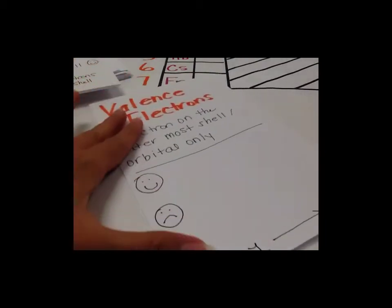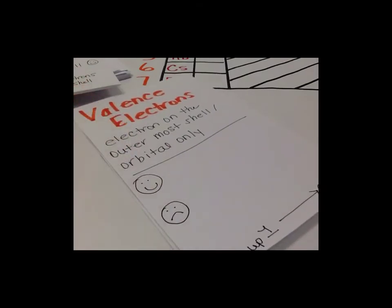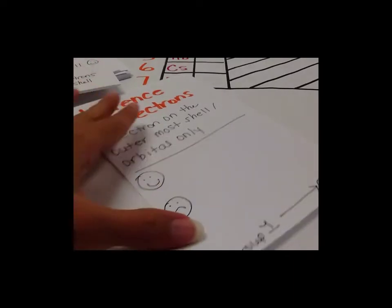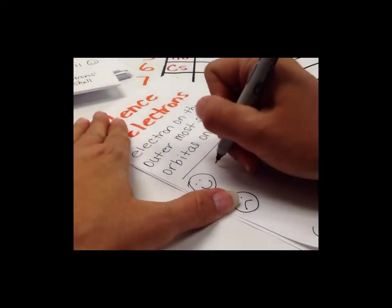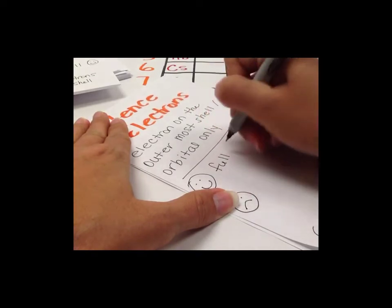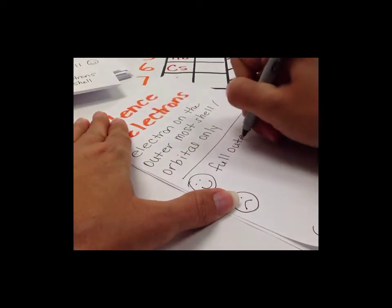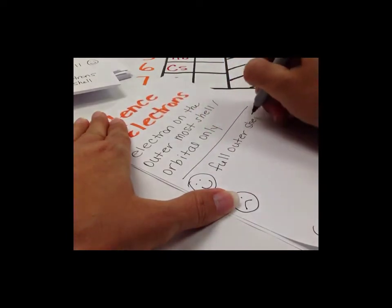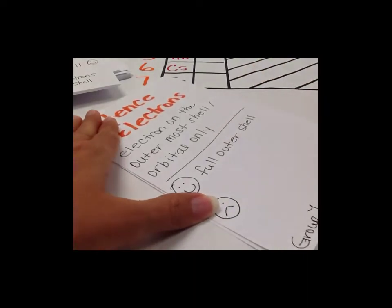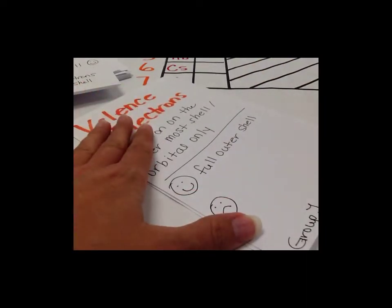If the atom has all of its electrons on the outer shell, then it is very happy. So that means it has a full outer shell. This is good because it is more stable.